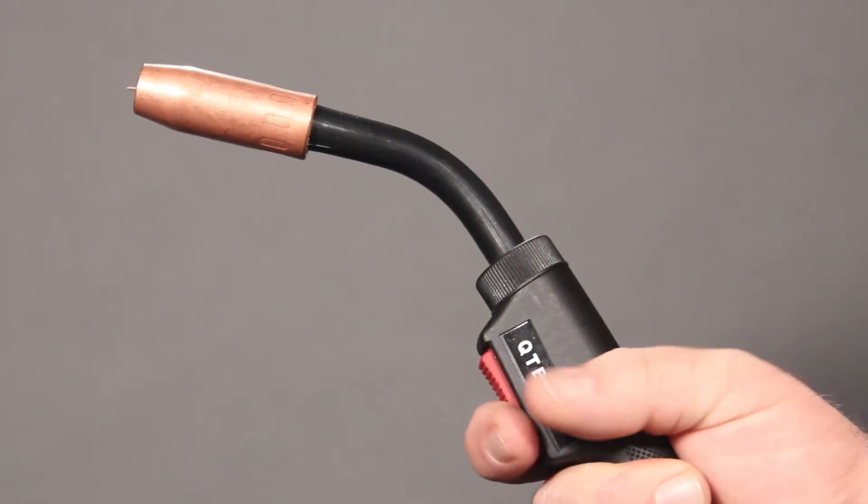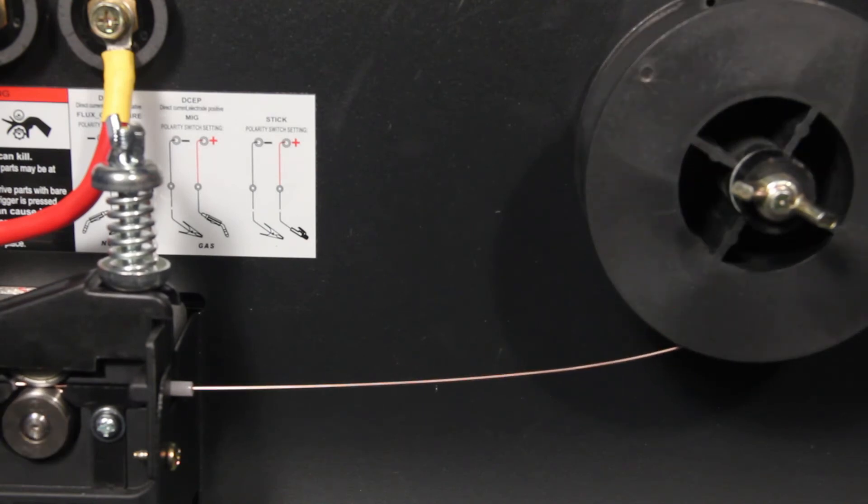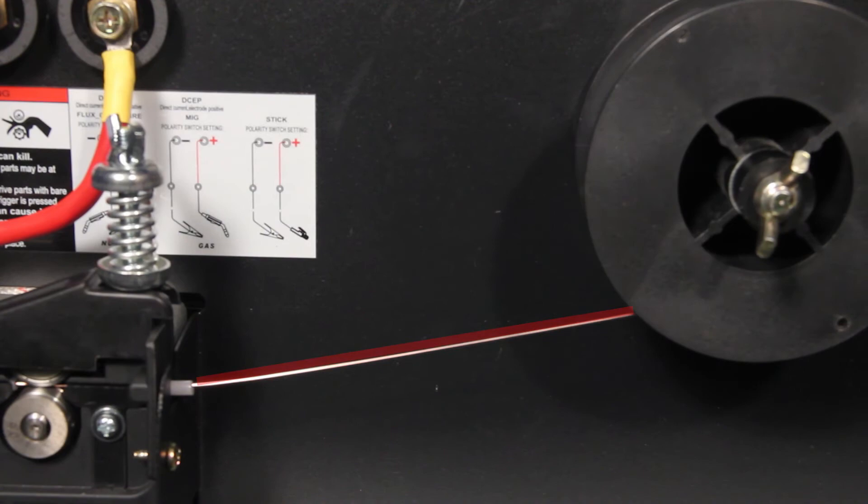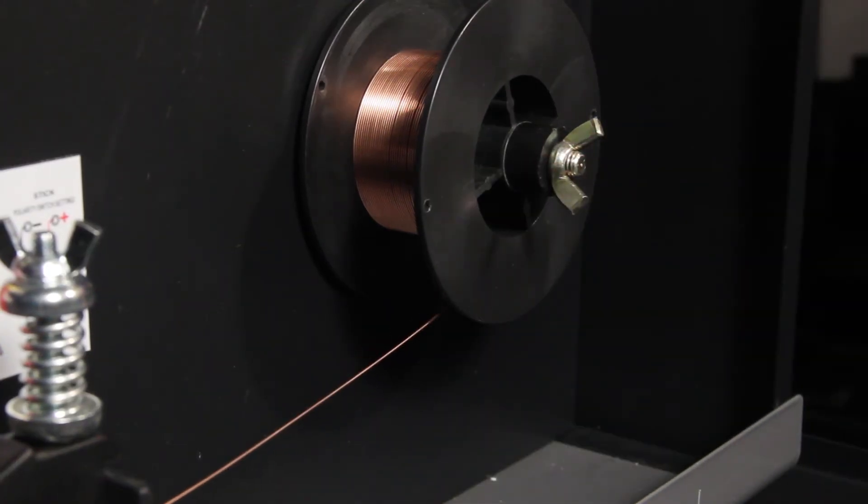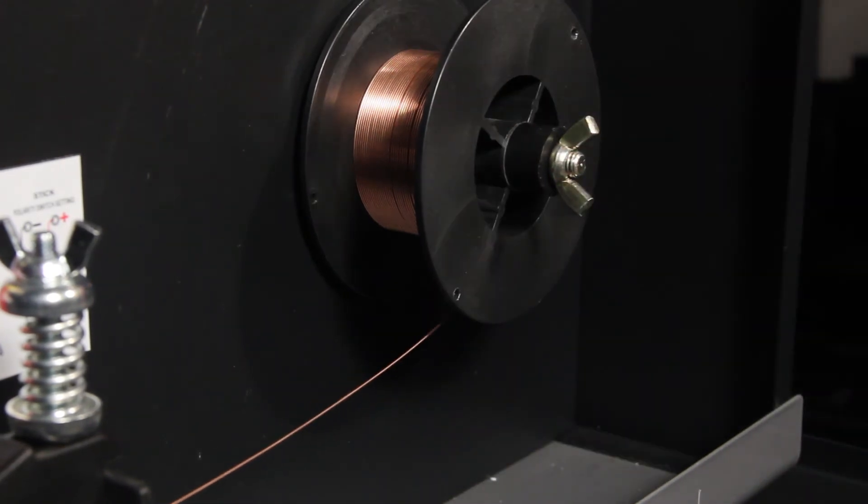Pull the trigger one to two seconds and release while watching the wire between the spool and the first inlet guide. Look for a sag in the wire when the wire stops feeding. A slight sag indicates the proper amount of tension. If there is no sag when the wire feed stops, then loosen the tension control to lower the spool tension. Remember to use small adjustments when adjusting the tension control.